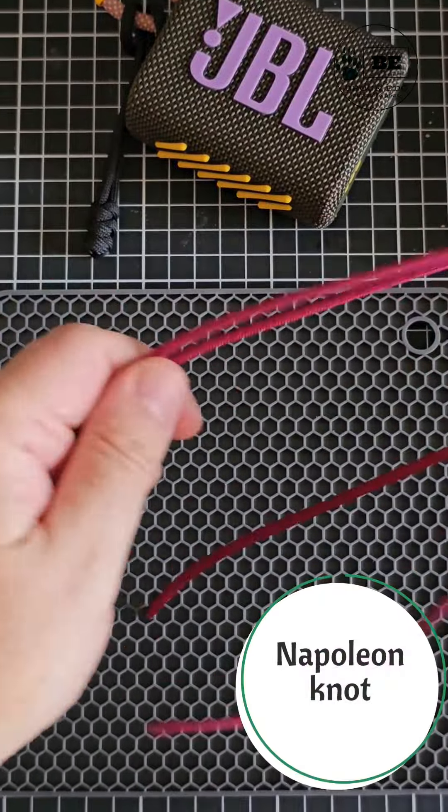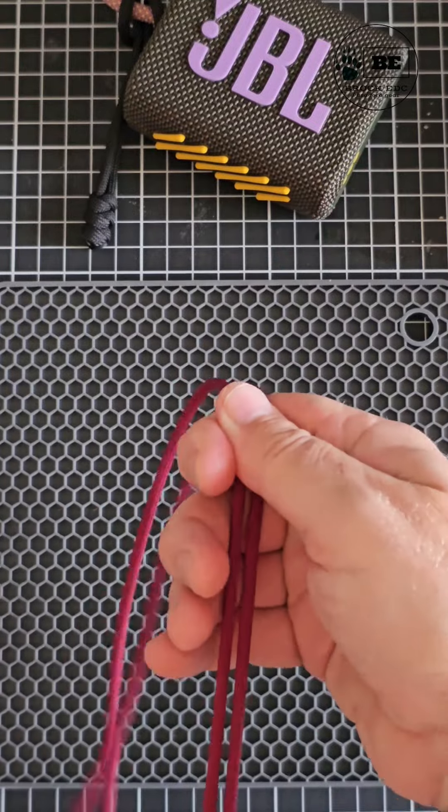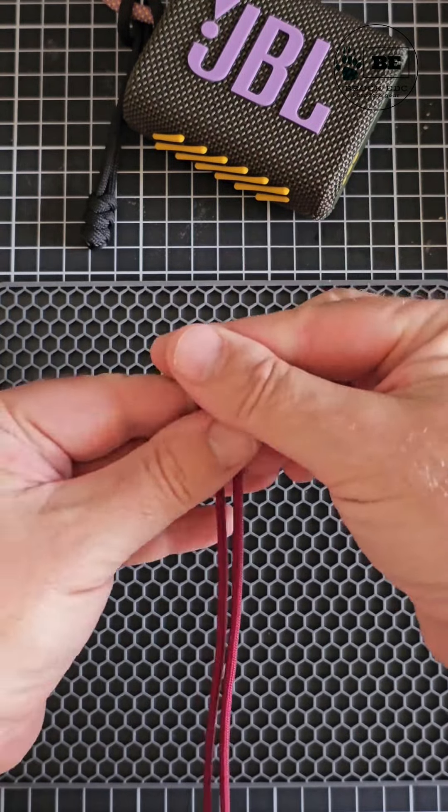Today we're going to take a look at decorative knots known as the Napoleon knot or sometimes the Chinese or flat knot. So first of all, find the midpoint of your paracord.